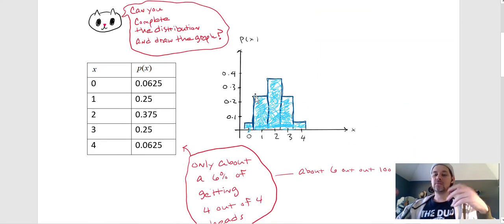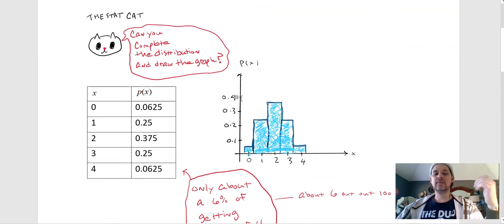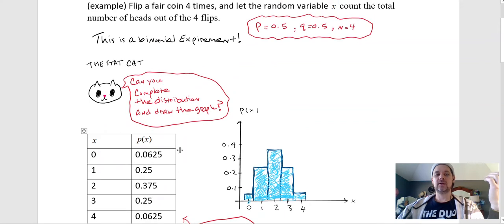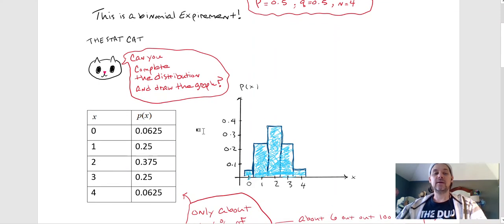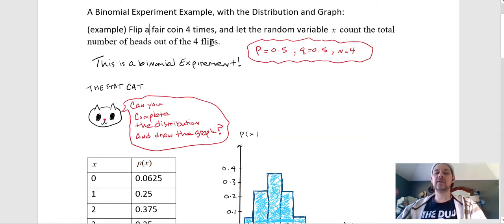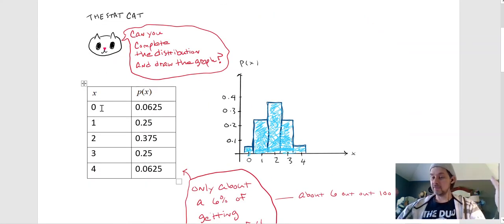It's a binomial experiment. Now, instead of calculating individual probabilities, I wanted to see if you could complete the distribution and maybe construct the graph, or at least recognize if a graph that's given to you is correct. If the random variable counts the number of heads out of four flips, then it could be zero - you flip it four times they're all tails - it could be one, you flip it four times there's somewhere out of those four flips there was one head.